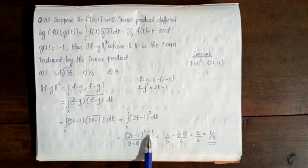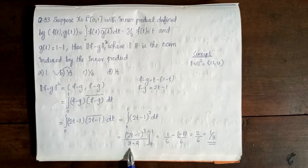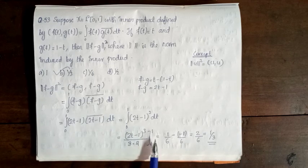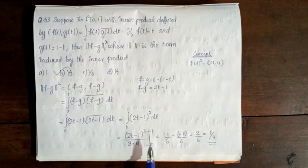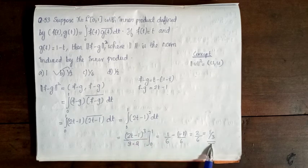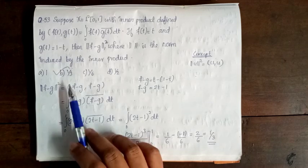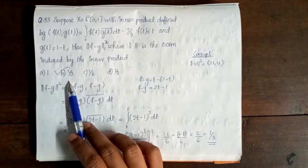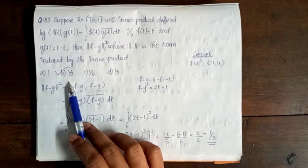Evaluating the integral: [((2t − 1)³) / (3 × 2)] from 0 to 1. Applying the limits gives 1/3. So option B is correct.